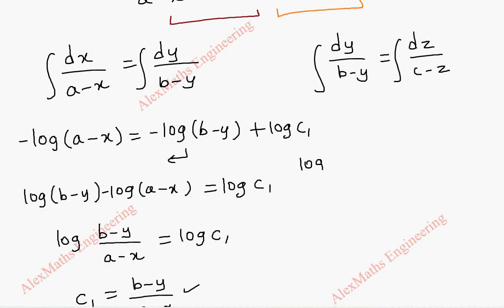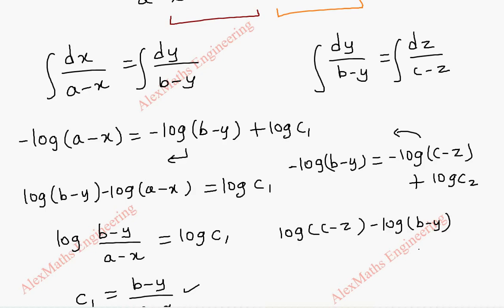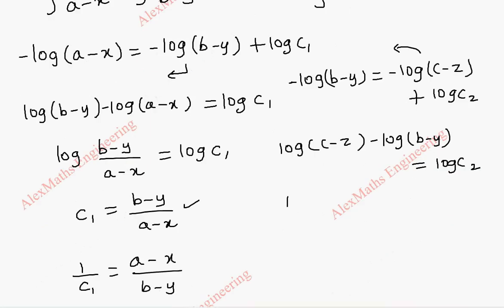We get log of B minus Y and there is a coefficient minus for Y, so we divide by minus 1. This is minus log of C minus Z plus log C2. Taking this to the other side, we get log of C minus Z minus log of B minus Y equal to log C2. Now, this is log of C minus Z by B minus Y equal to log C2. Removing log, we get C minus Z by B minus Y equal to C2.